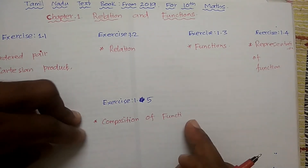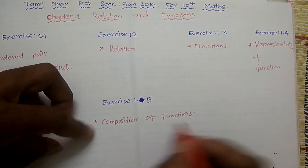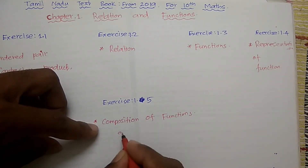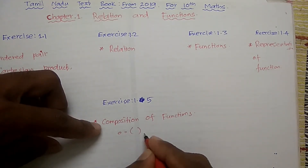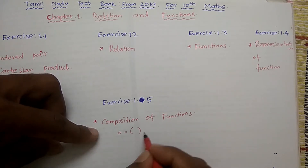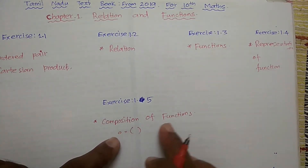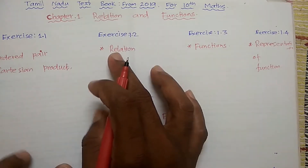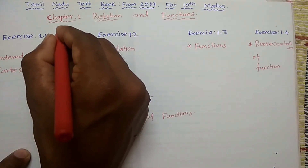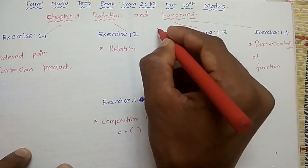Composition of functions. This is the same meaning — small circle. So two functions can form composite functions. In the chapter: 1.2, 1.3, 1.4, and 1.5.